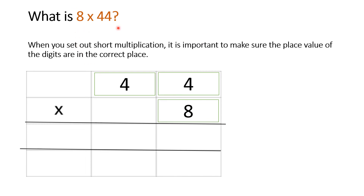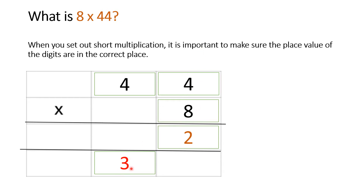Here we have 8 times 44. I will place the larger number at the top and what I'm multiplying underneath. First, I start with the units: 8 times 4 gives me 32, so 3 tens go into the tens column. Then, four tens times 8 units equals 320. I need to add on my three tens from before, giving me 350.